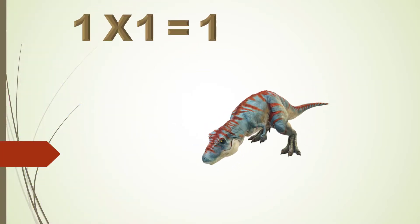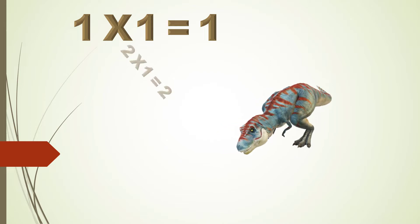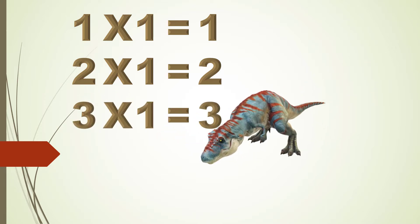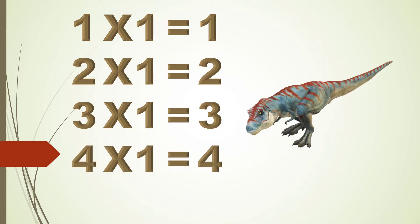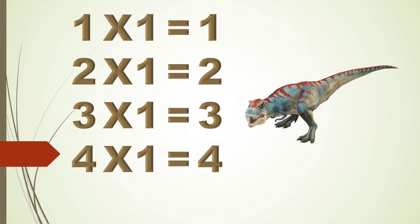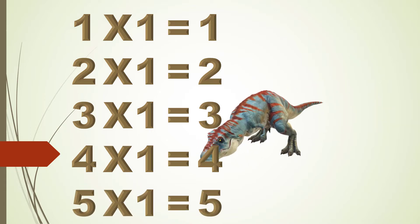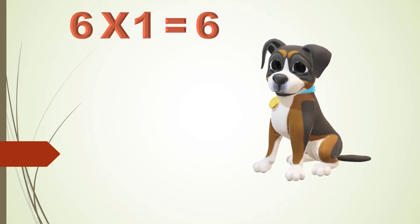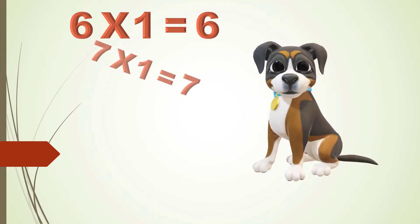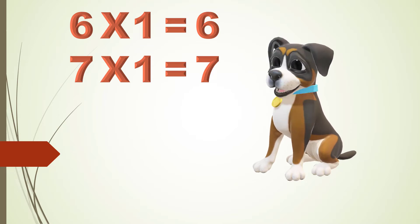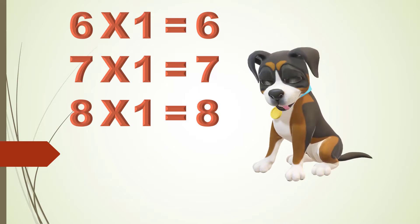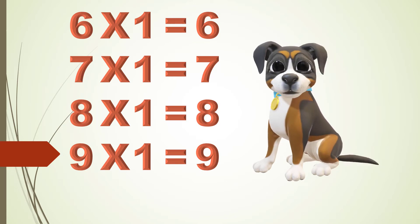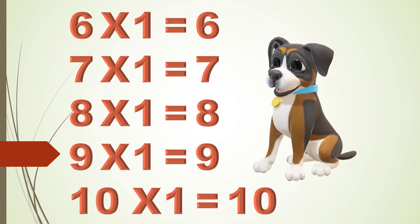1 x 1 is 1, 2 x 1 are 2, 3 x 1 are 3, 4 x 1 are 4, 5 x 1 are 5, 6 x 1 are 6, 7 x 1 are 7, 8 x 1 are 8, 9 x 1 are 9, 10 x 1 are 10.